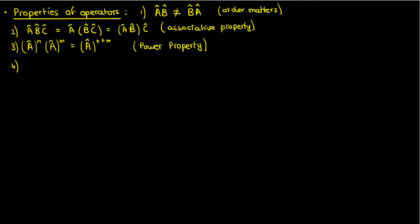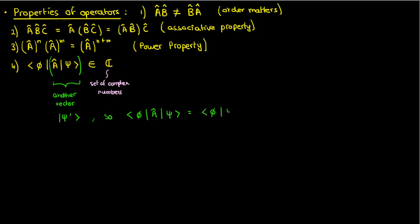The fourth property is that this variation on the bracket is a complex number. The reason is that if I just look at this part, then A hat operating on psi is just another vector psi prime. And in the end, what you end up with is just the inner product of phi and psi prime, which, as we all know by now, is another complex number.